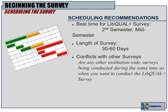My scheduling recommendation is to conduct the survey in the second semester — spring, not fall — and generally mid-semester, either before or after midterms. As Angela mentioned, keep it open more than three weeks. We've had better response rates by conducting it over a 45-day period and sending occasional reminders. You don't want too many reminders, but do send them to increase participation. Check with your campus to make sure the survey does not conflict with other institutional-wide surveys such as NSSE or SERU.